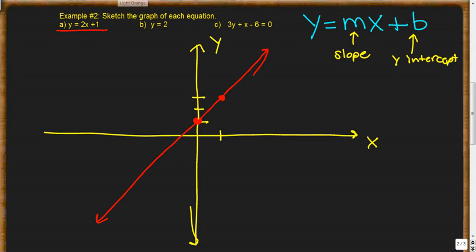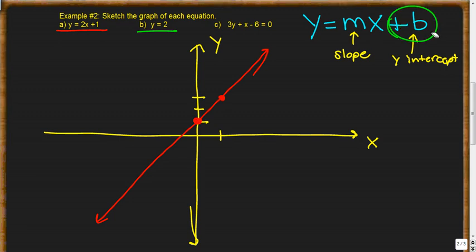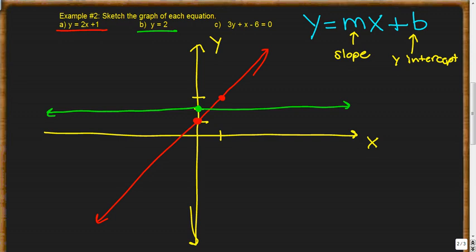Our next equation is y = 2. In this case, there is no x, which means our slope is 0. So all we're left with is our y-intercept, which is 2. We go to y = 2, and since the slope is 0, the line just goes sideways — it doesn't go up or down. Simple enough.